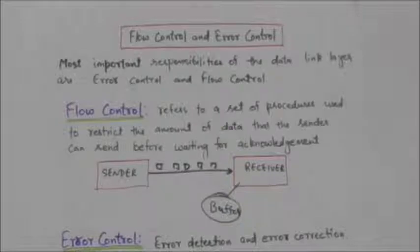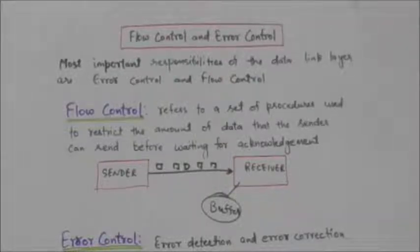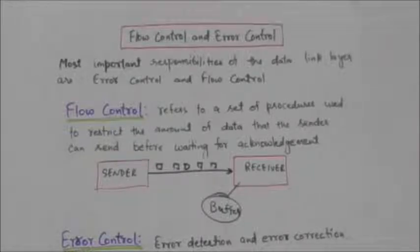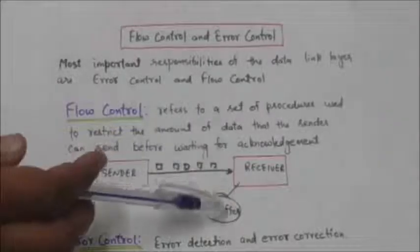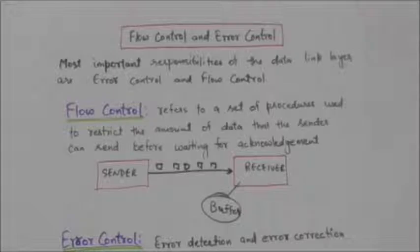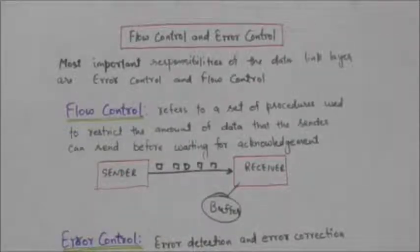Flow control is one of the most important duties of the data link layer. What happens if the speed at which a receiving device can process incoming data is limited, and also the amount of memory the receiving device has to store incoming data is also limited? The flow of data should be such that it does not overwhelm the receiver. The data which arrives at the receiver must be checked and processed before it can be used, and the rate of such processing is usually slower than the rate of transmission. Therefore each receiving device has a block of memory called a buffer, reserved for storing incoming data until they are processed. If this buffer begins to fill up, then the receiver must be able to tell the sender to halt transmission until it is once again able to receive.